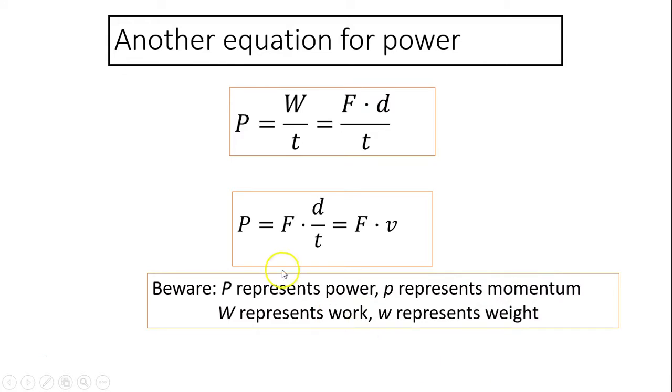Another equation for power. Power equals work over time. Work is force times distance over time. Now we can rearrange this equation. Put the force in front, then times distance over time. Distance over time is velocity. So power equals force times velocity. So power means force is how strong. Strong, both strong and fast means more powerful.